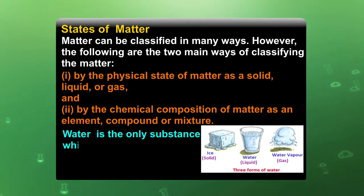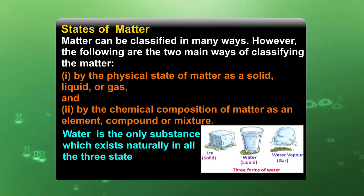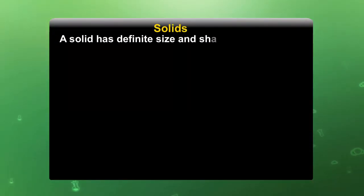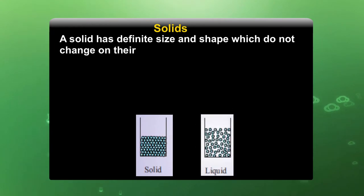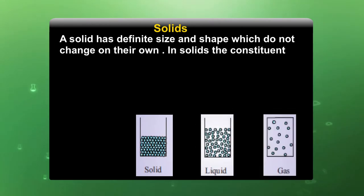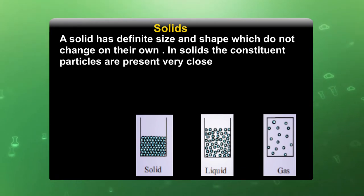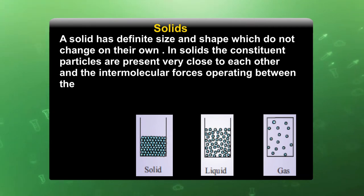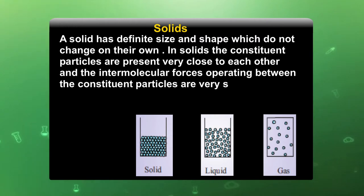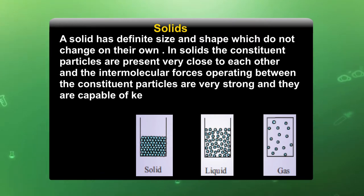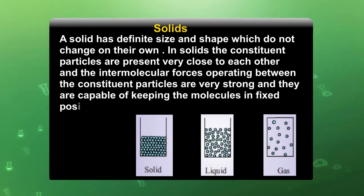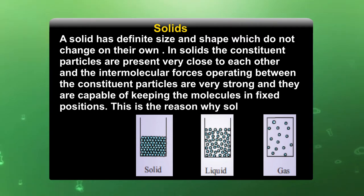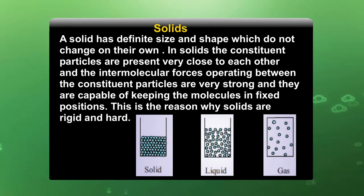Water is the only substance which exists naturally in all three states. In the solid state, a solid has a definite size and shape which do not change on their own. Suppose we take a stone, a duster, or chalk — there is no change in their shape. In solids, the constituent particles are very close to each other, and the intermolecular forces are very strong, keeping molecules in fixed positions. This is why solids are rigid and hard.